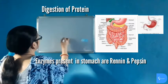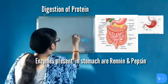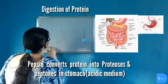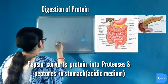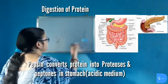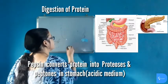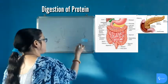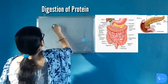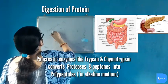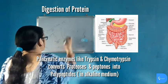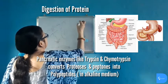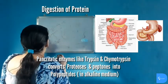In the stomach, proteins are broken into proteoses and peptones, which are acidic in nature. From the stomach, the food reaches the duodenum where it becomes alkaline due to the presence of bile juice. The pancreatic enzymes trypsin and chymotrypsin, secreted by the pancreas and poured into the duodenum via the common duct, act on proteoses and peptones and convert them into polypeptides.